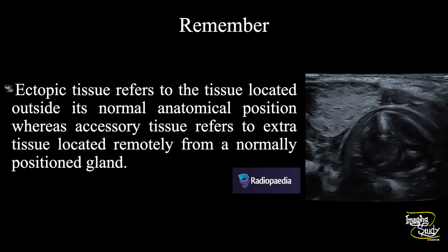The take-home message: ectopic thyroid refers to thyroid tissue located outside its normal anatomical position, whereas accessory thyroid refers to extra thyroid tissue located remotely from a normally positioned thyroid gland. That means in this case, this is actually an ectopic thyroid.